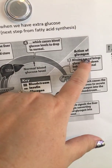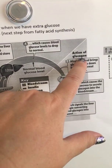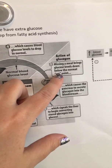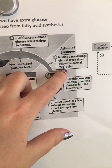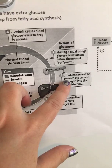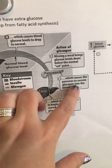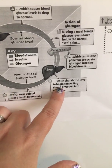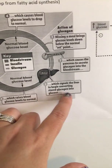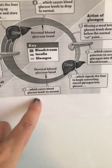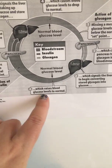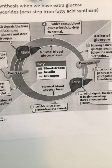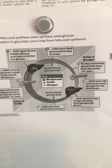This causes blood glucose levels to drop back to normal. The glucose is gone — this is the action of glucagon, where a missing meal brings glucose levels down below the normal set point. This causes the pancreas to secrete glucagon into the bloodstream, which signals the liver to begin converting stored glycogen into glucose, raising blood glucose back to normal. We're always trying to get this homeostatic level of sugar.